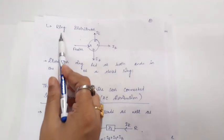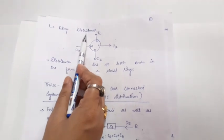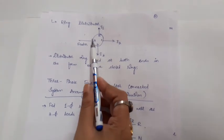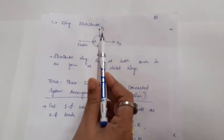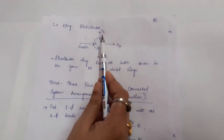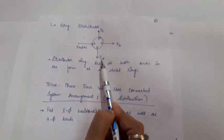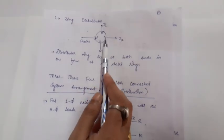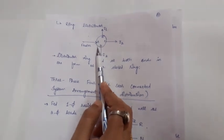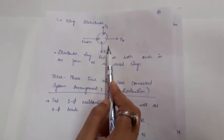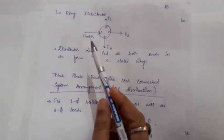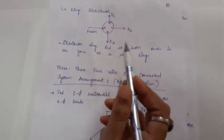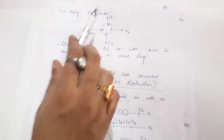The third type is the ring distributor. Here, one feeder forms a feeder ring, and from the feeder ring, three load currents I1, I2, and I3 are tapped off at different points. The distributor ring fed at both ends to form a closed ring is called the ring distributor. This completes the DC distribution: distributor fed at one end, distributor fed at two ends, and the ring distributor.